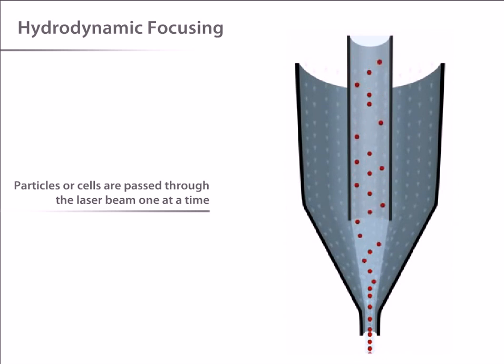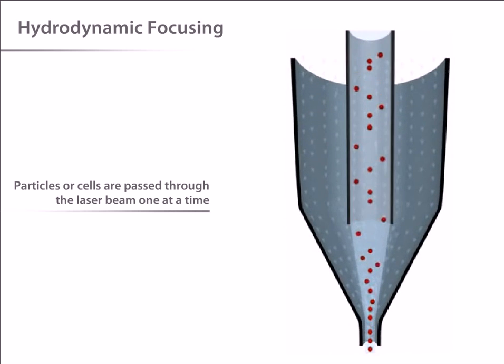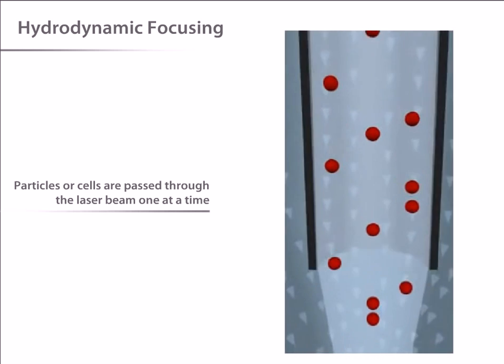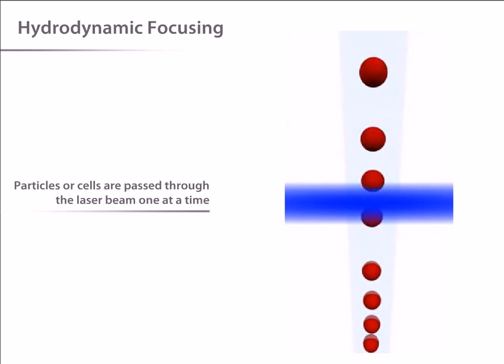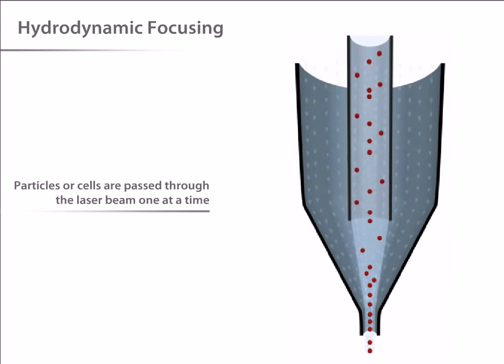Most flow cytometers accomplish this by injecting the sample stream containing the cells into a flowing stream of sheath fluid or saline solution. As you can see, the sample stream becomes compressed to roughly one cell in diameter. This is called hydrodynamic focusing.